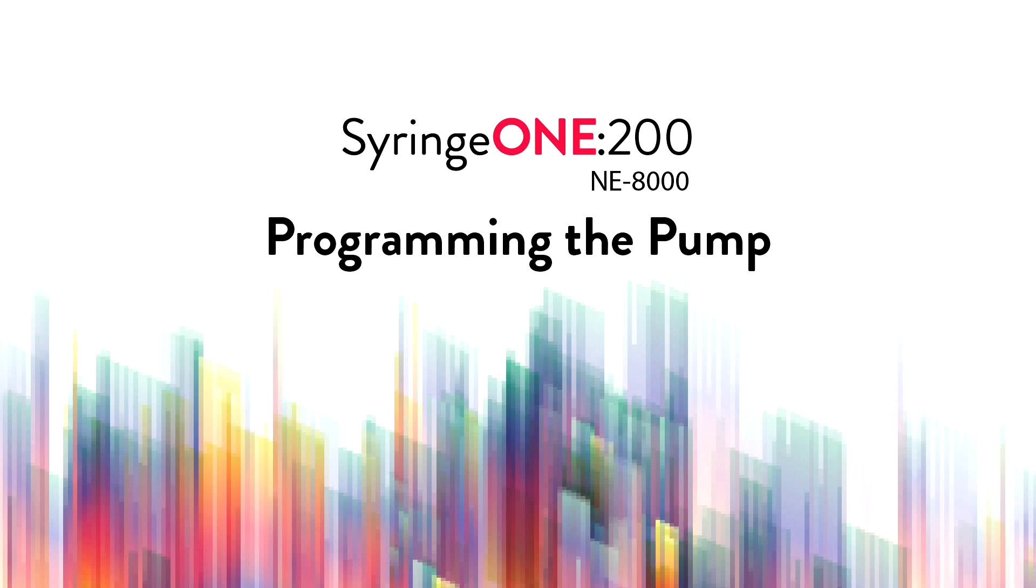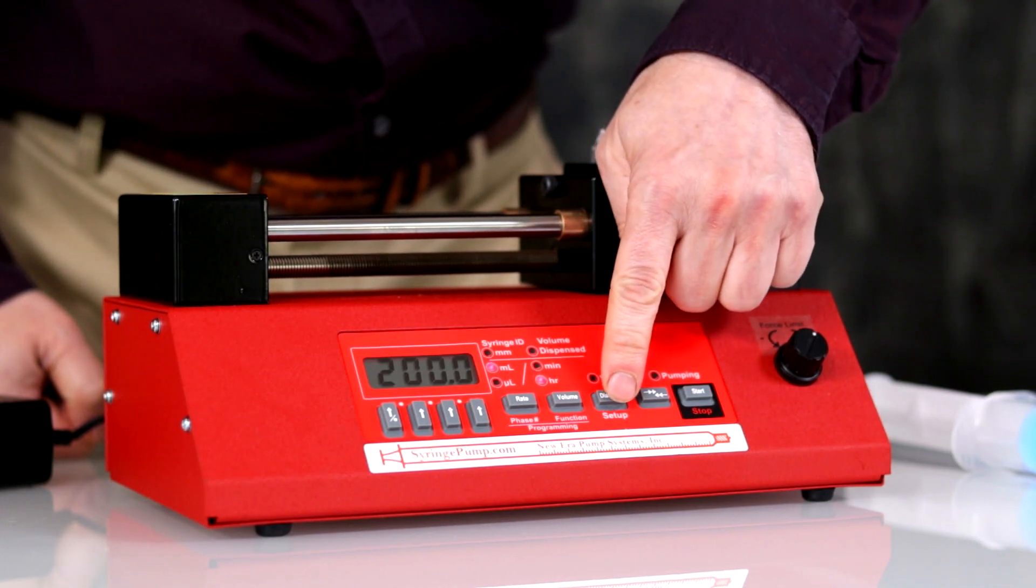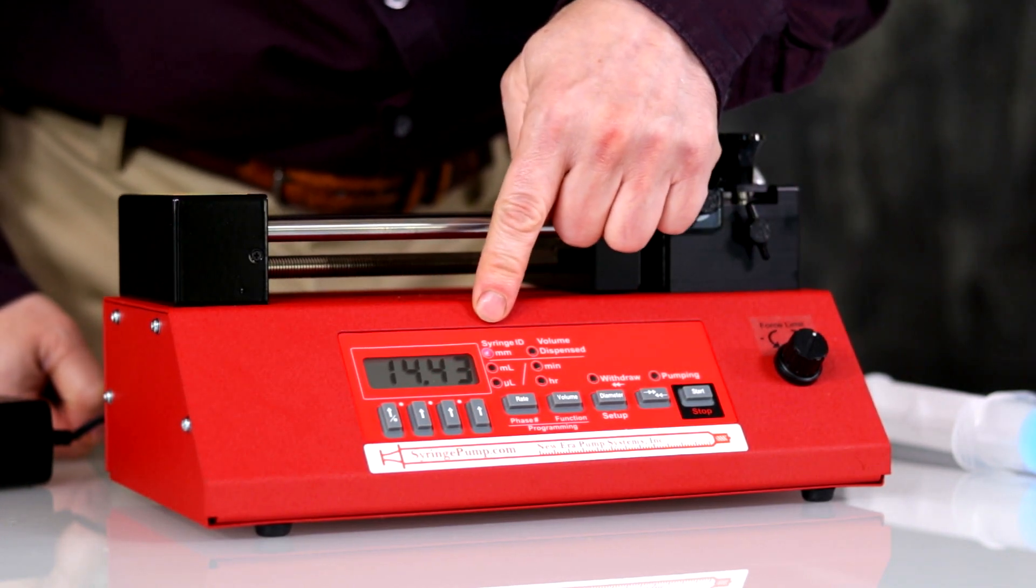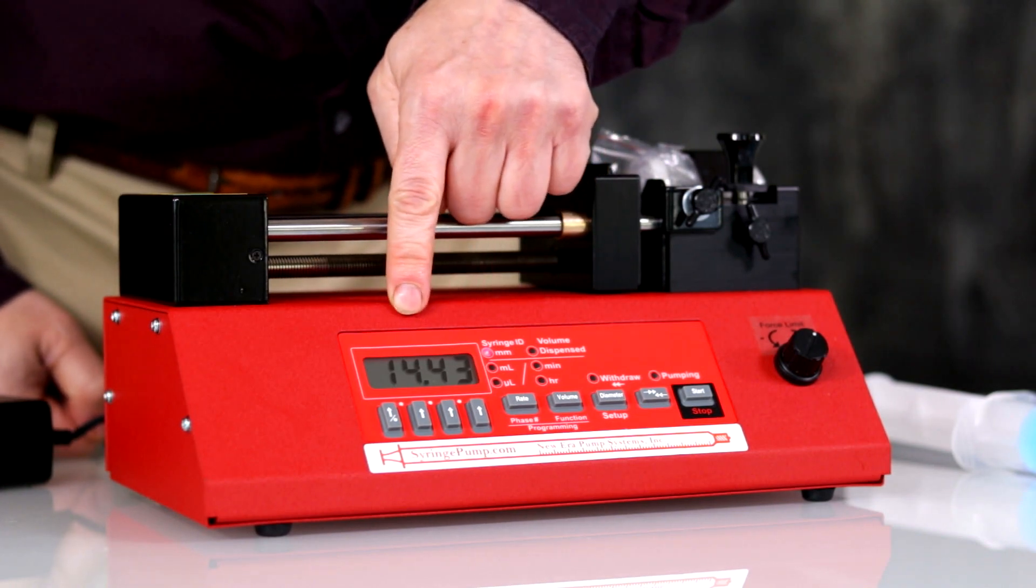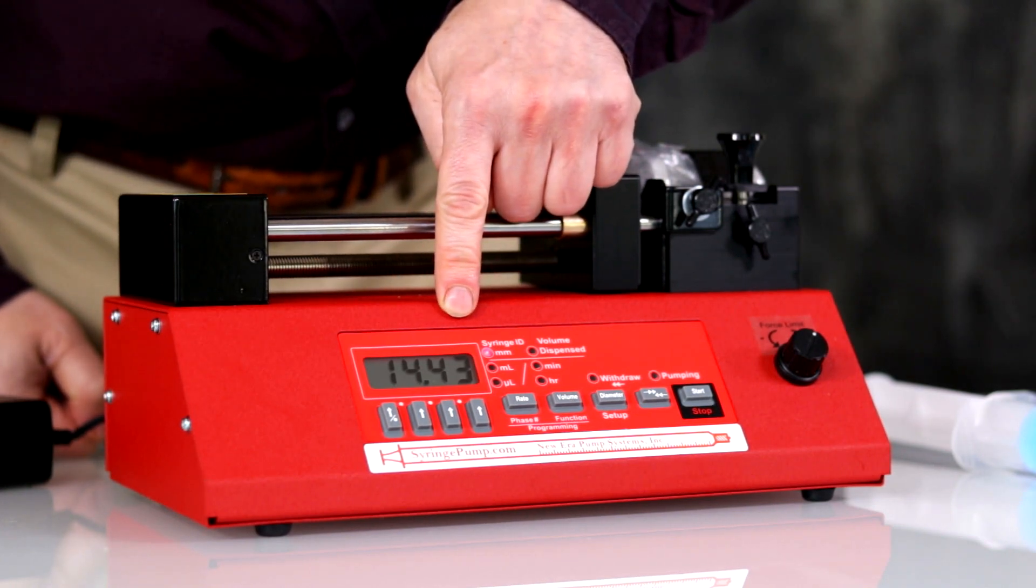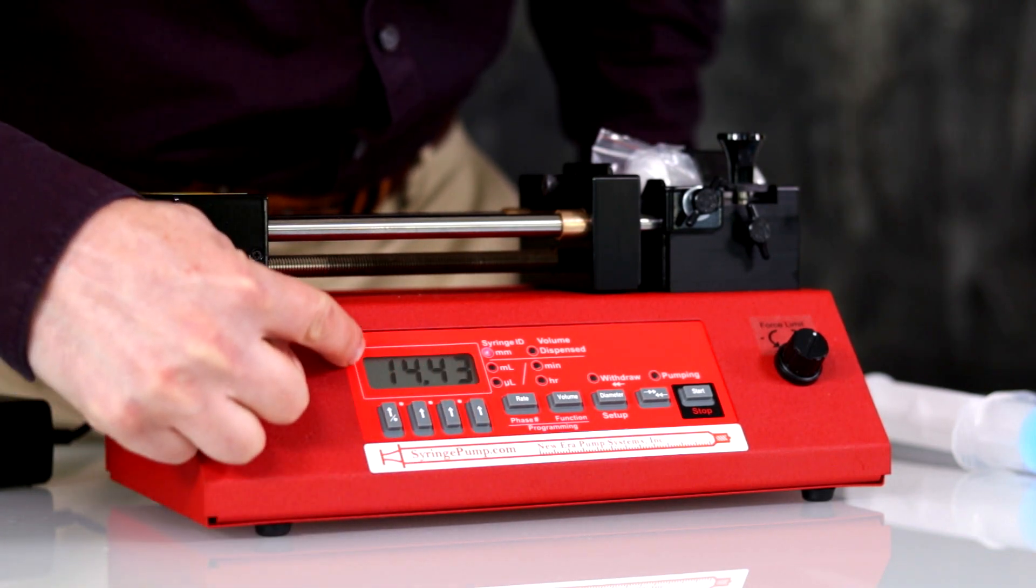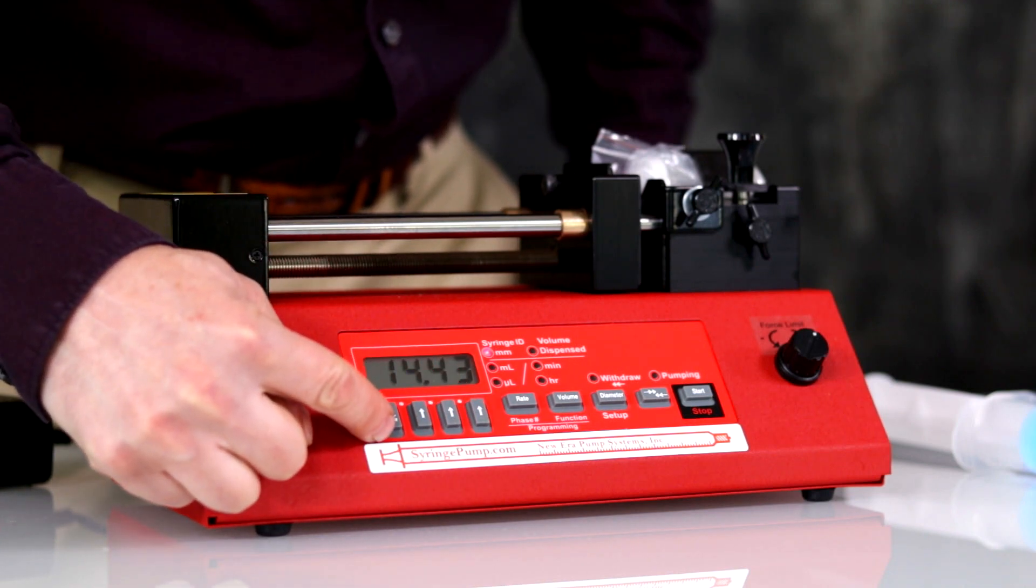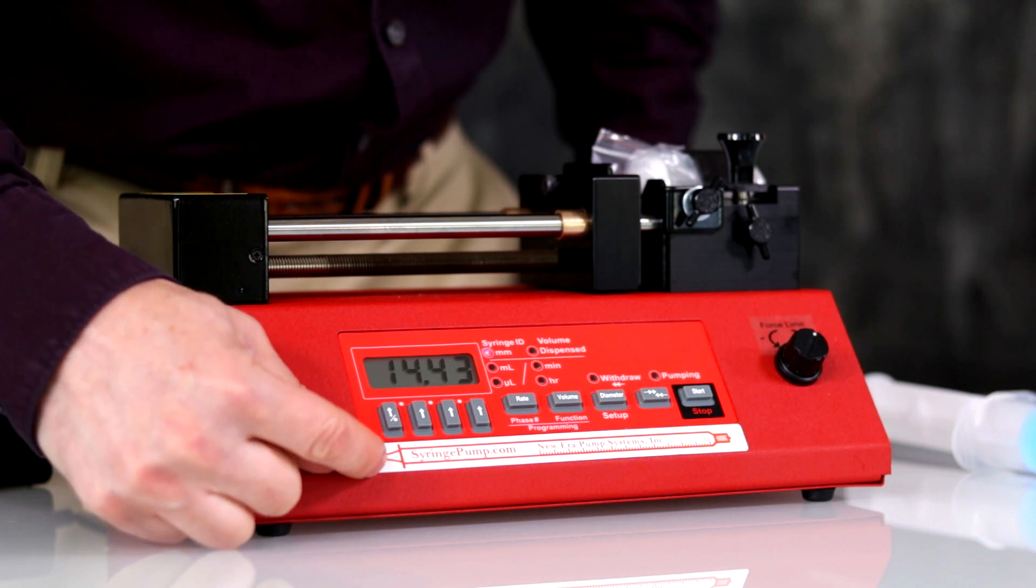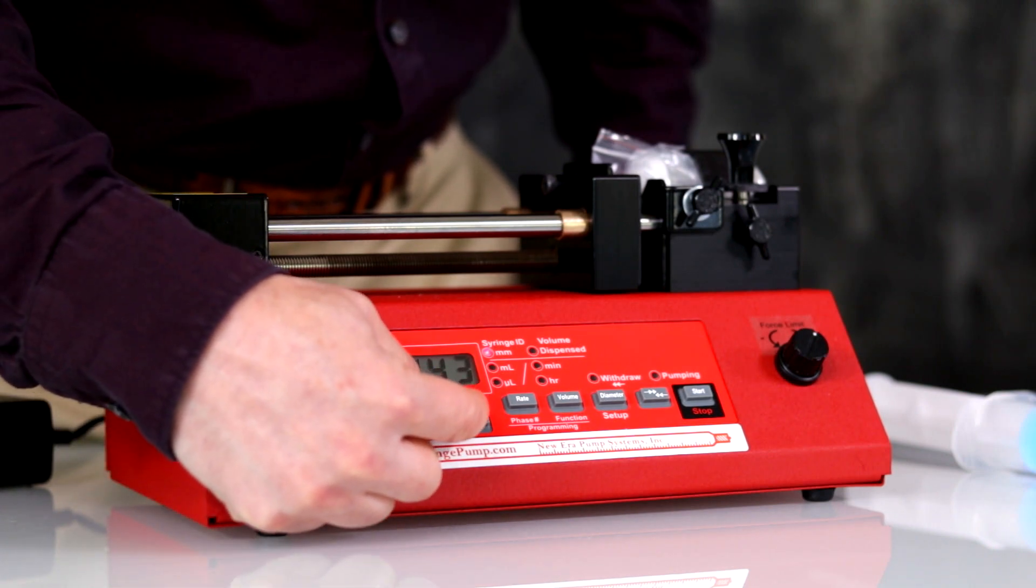NE-8000 programming the pump. To program the pump, first enter the syringe diameter. Press the diameter key. It will display the currently selected diameter, 14.43 millimeters, which is the factory default. To change, use the up arrow keys to increment individual digits. To set the decimal point, simultaneously press the two up arrow keys under where you want the decimal point to be. Press it again to clear the decimal point.